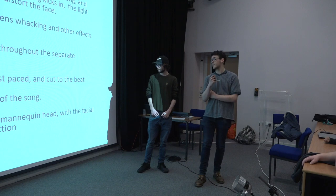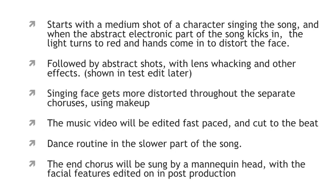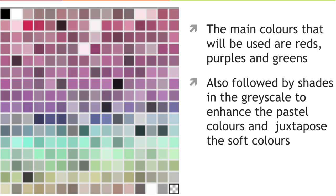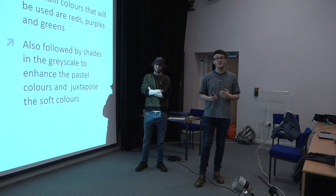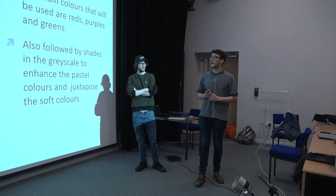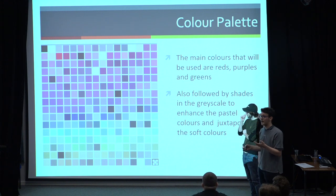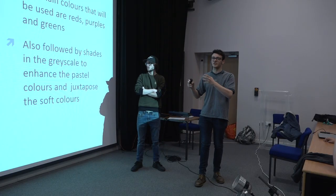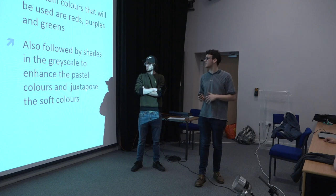And the end chorus of the song will be sung by a mannequin head, which is shown later in the test edit with the facial features edited on in post-production. So this is the colour palette that we've got — it's reds, purples, dark blues, and light greens, just to show the mix of emotions in the song. And then blacks, whites, and grays for the dance part and the choruses, just to show that they're quite simple and laid back, and then the mix of emotions in the abstract parts as well.